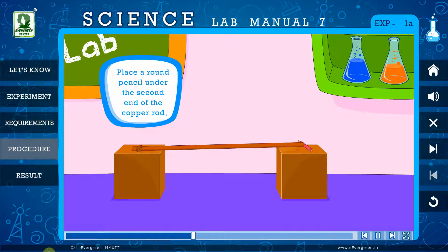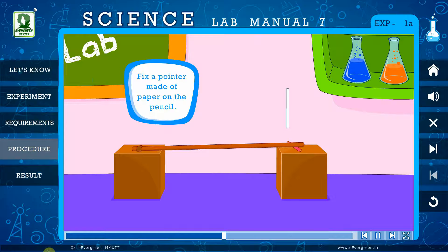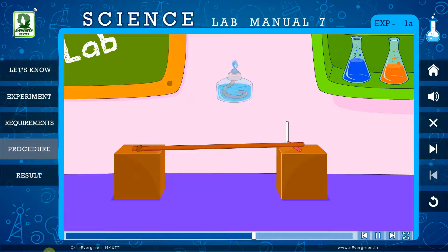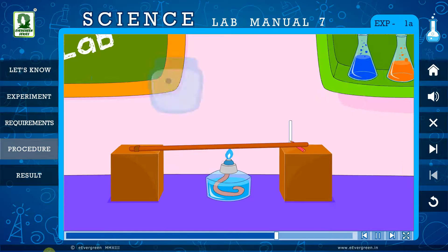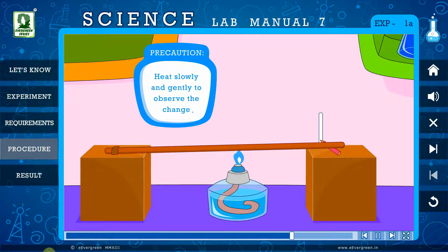Place a round pencil under the second end of the copper rod. Fix a pointer made of paper on the pencil. Heat the copper rod with the lamp. Precaution: Heat slowly and gently to observe the change.